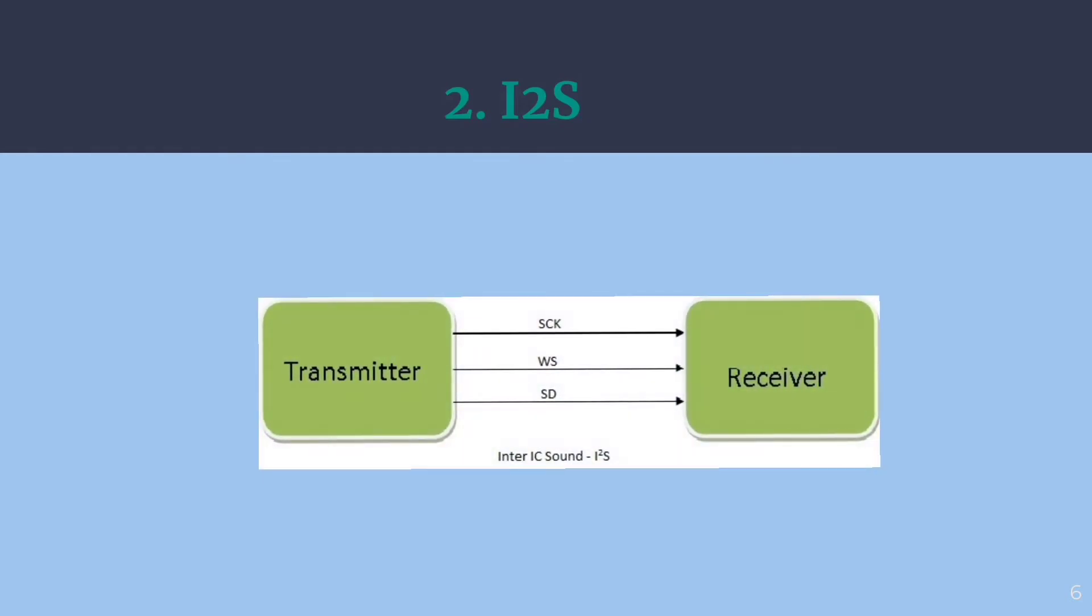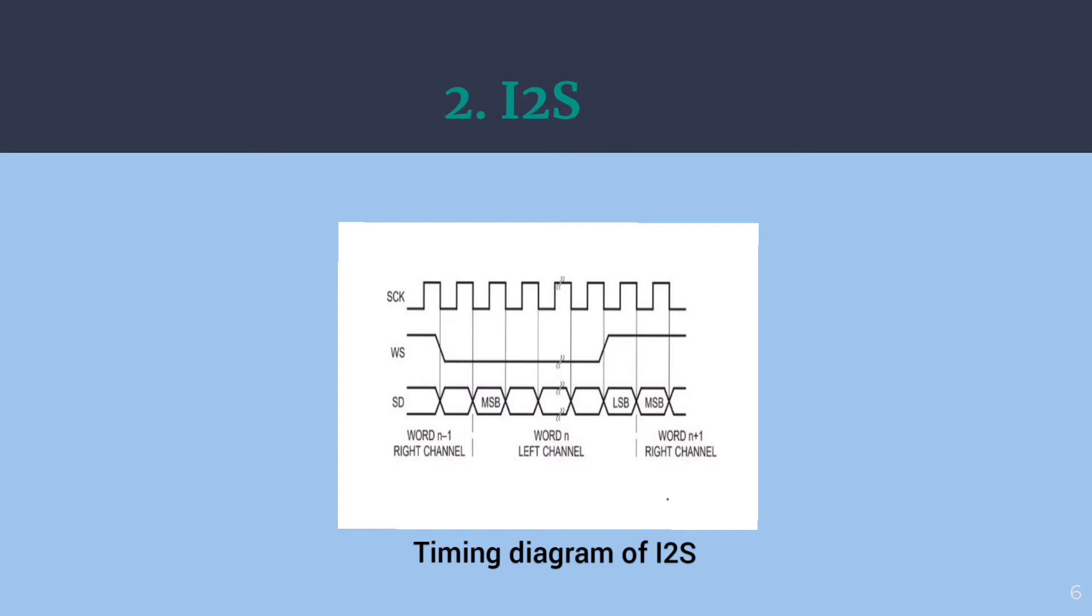I2S Inter-IC Sound. It is a standard serial bus interface used for connecting digital audio devices. It consists of a line for two time multiplex data channels, left and right channels, a word select line and a clock line. Serial clock drives the flow of data in the system whereas word select is to choose between right and left channels of audio data.